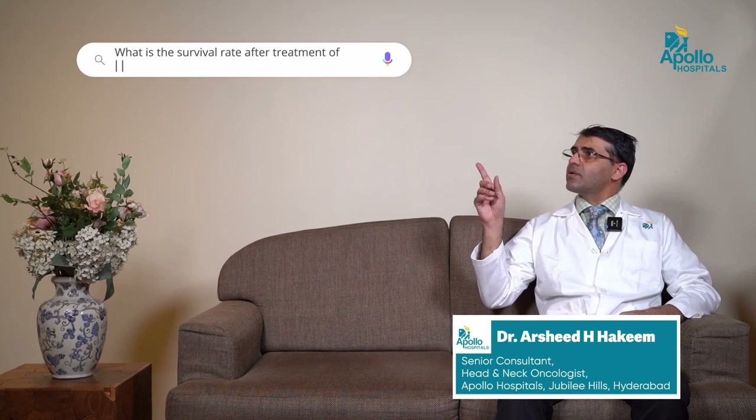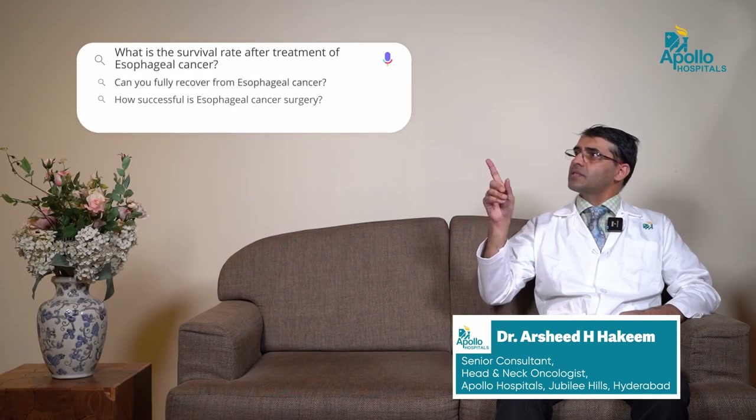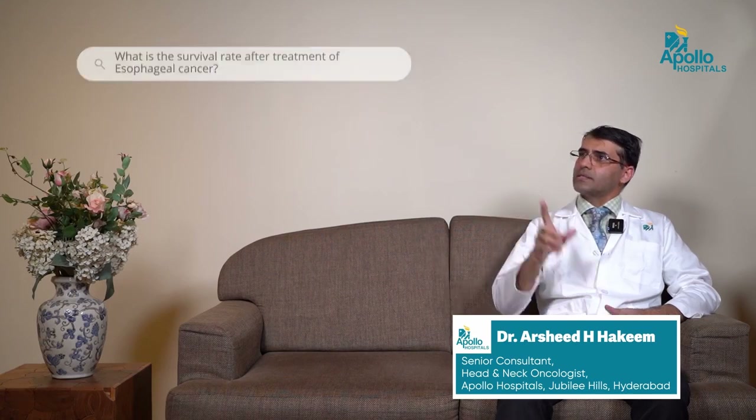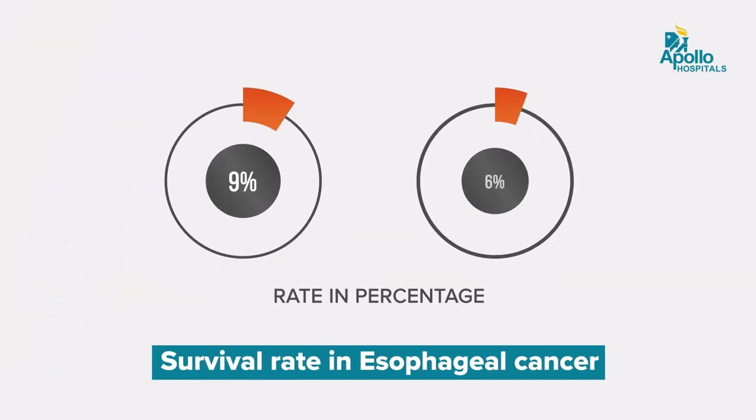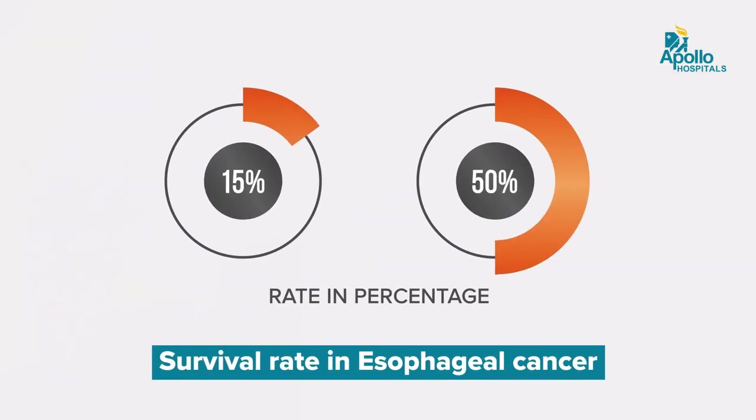What is the survival rate after treatment of esophageal cancer? Esophageal cancer is not a favorable cancer. The survival rate, taking all stages into consideration, varies from around 15 to 50 percent. Lower stages have a higher survival rate of around 50 percent, while higher stages see a drastic decrease in survival.